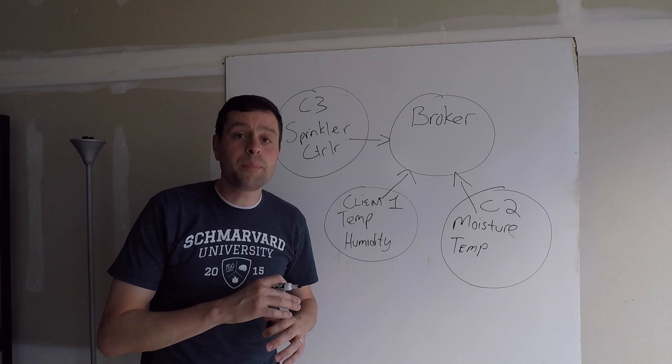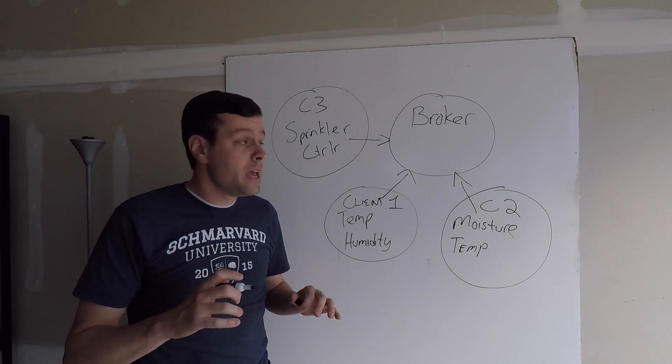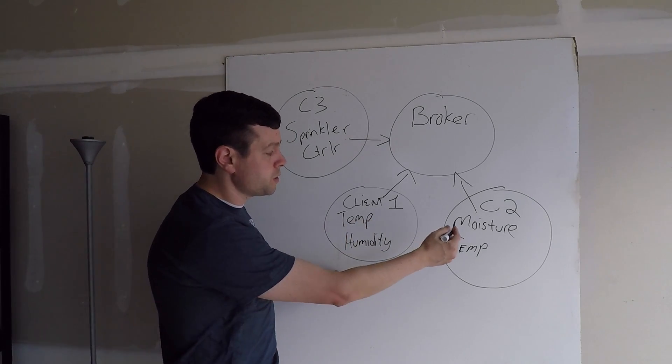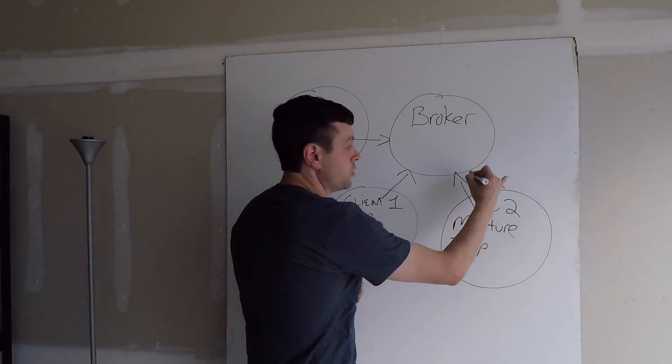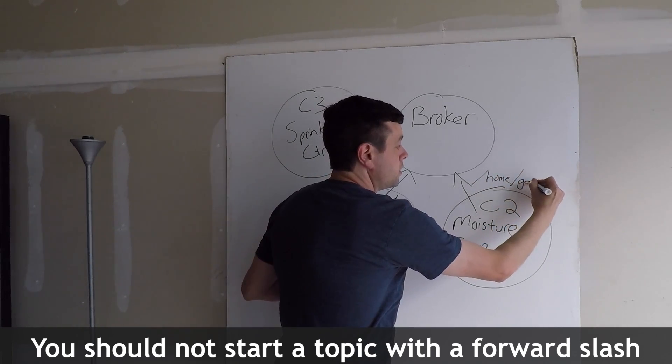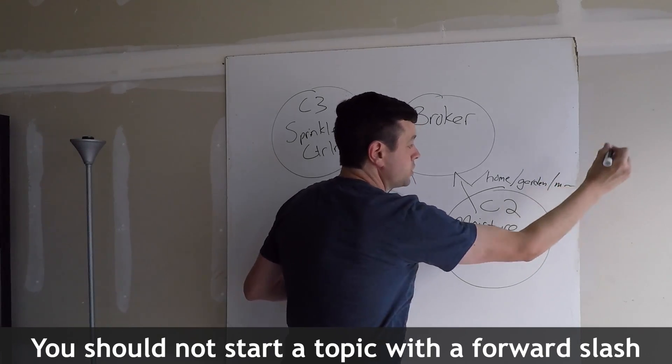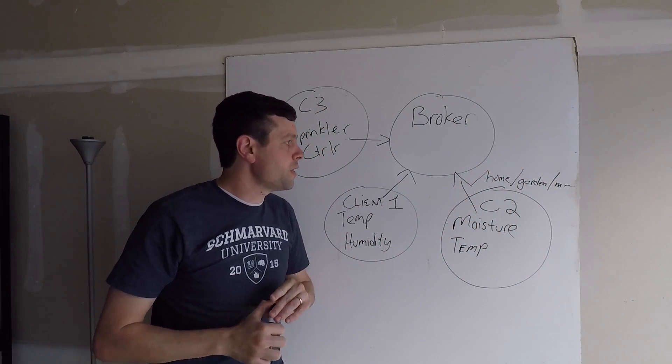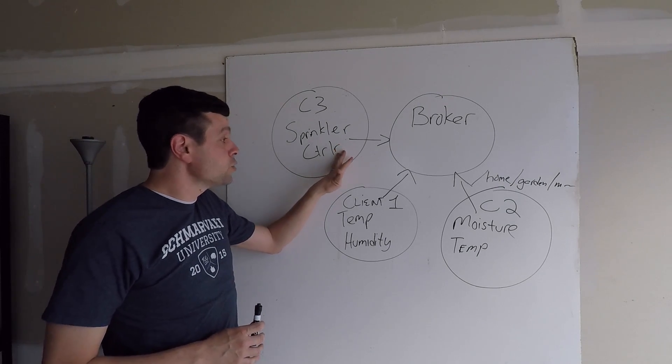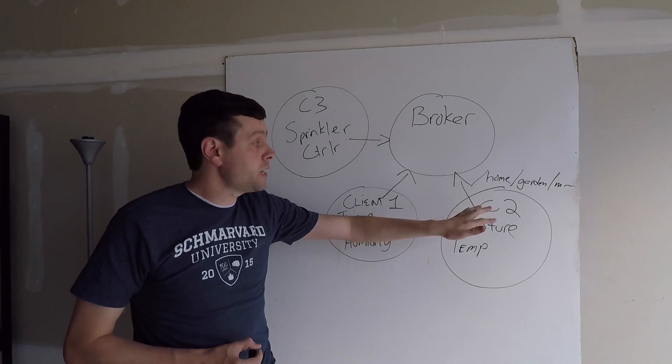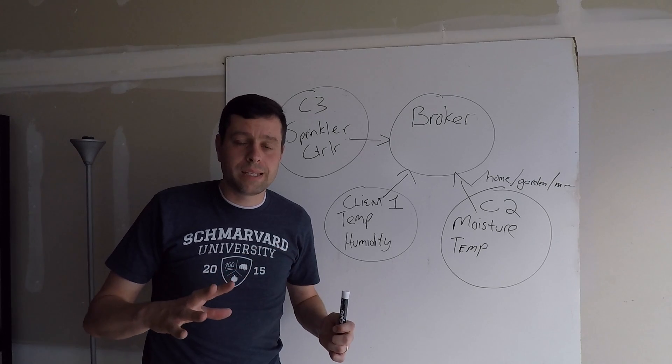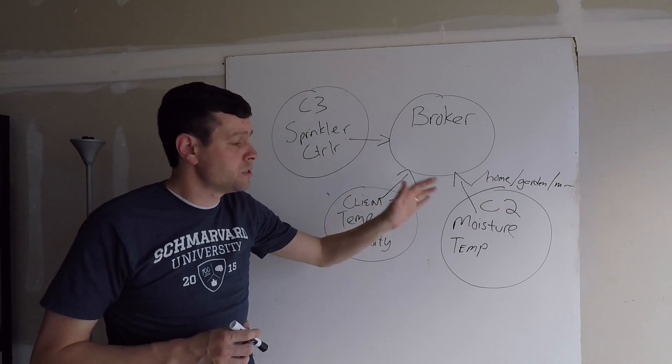So, topics, messages. You can subscribe to them or you can publish to them. Now, what does a topic look like? A topic is literally just a string and it's hierarchical. And I'm not going to get into the wild cards and things that you can use for that. But literally, for something like the moisture sensor, the topic could be something like forward slash home slash garden slash moisture. Just pretend I wrote moisture out there. So, that's an example of a topic. Home slash garden slash moisture. And so, the sprinkler controller can subscribe to that topic. Anytime a message is published on that topic, the broker will let the sprinkler controller know about it. Okay. So, that's the very basics of topics. And these things can be as fancy as you want and as long as you want.